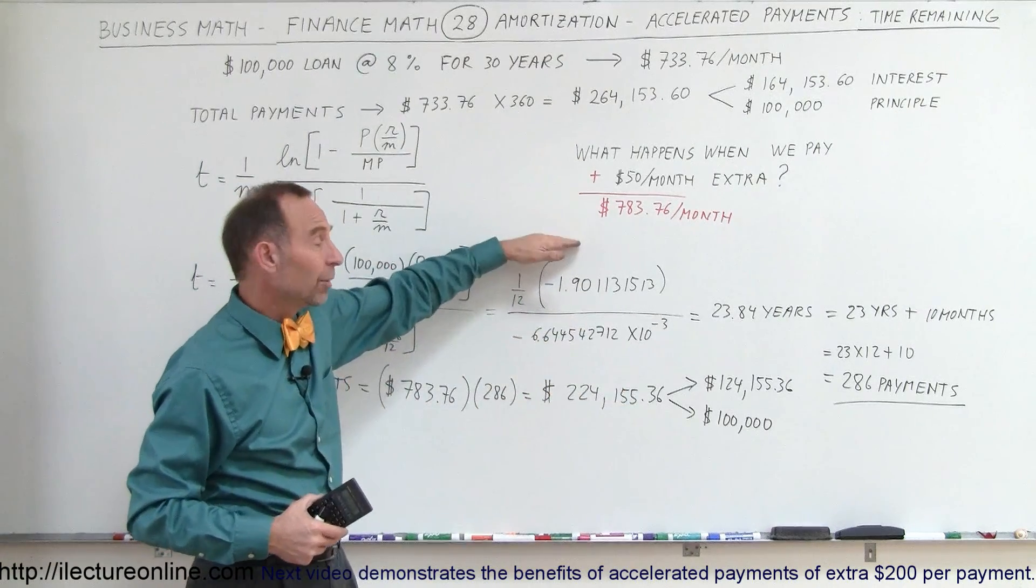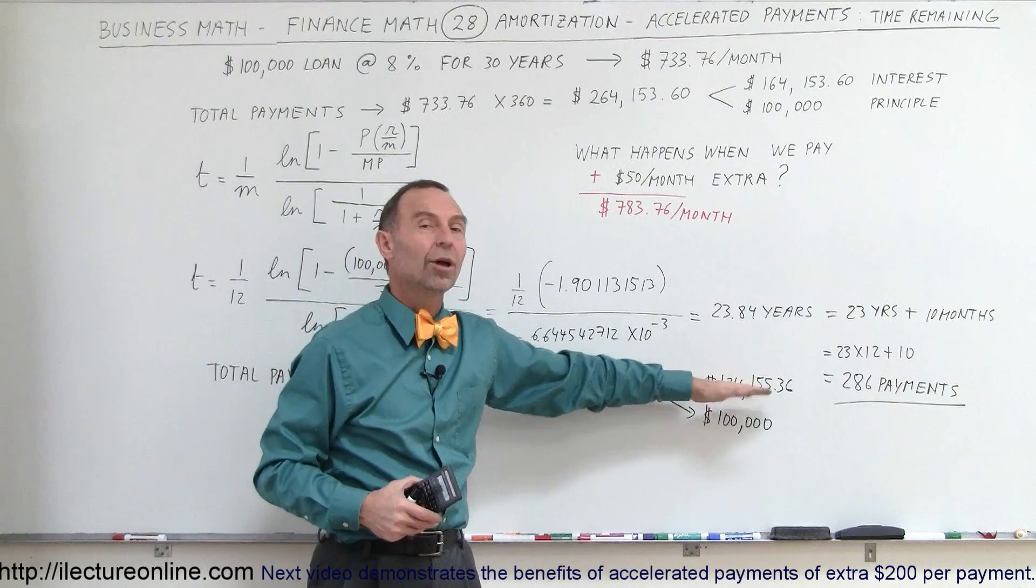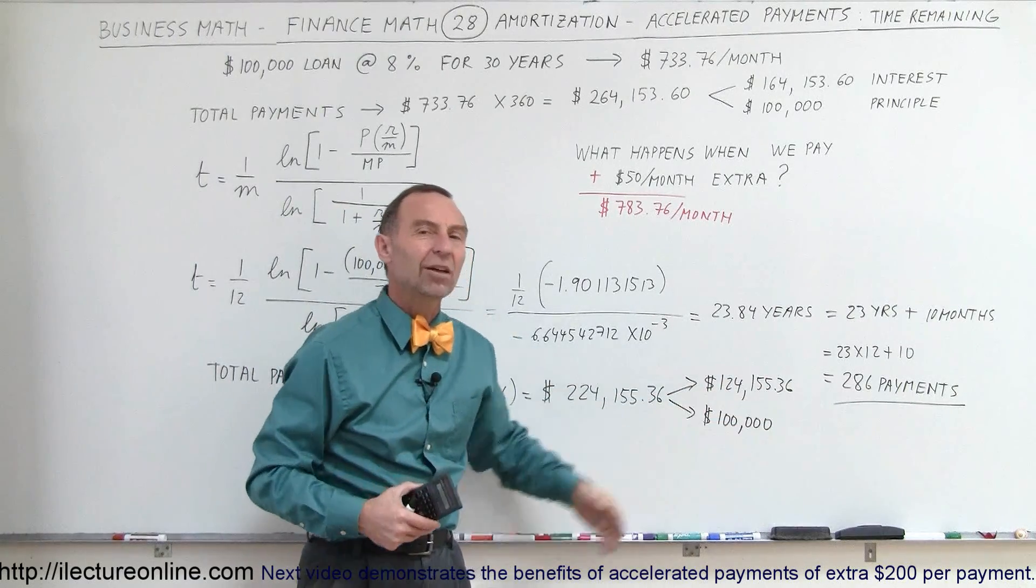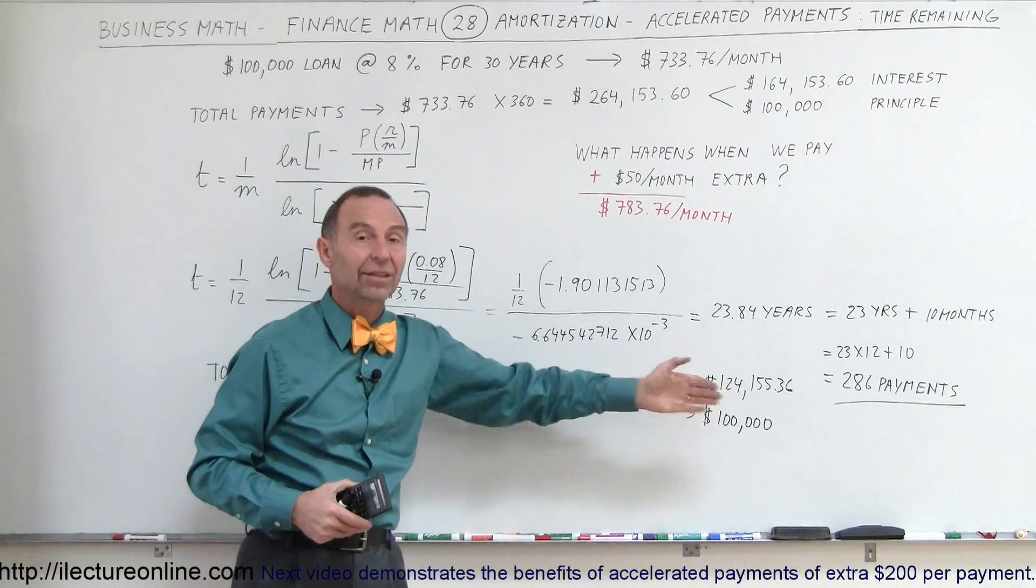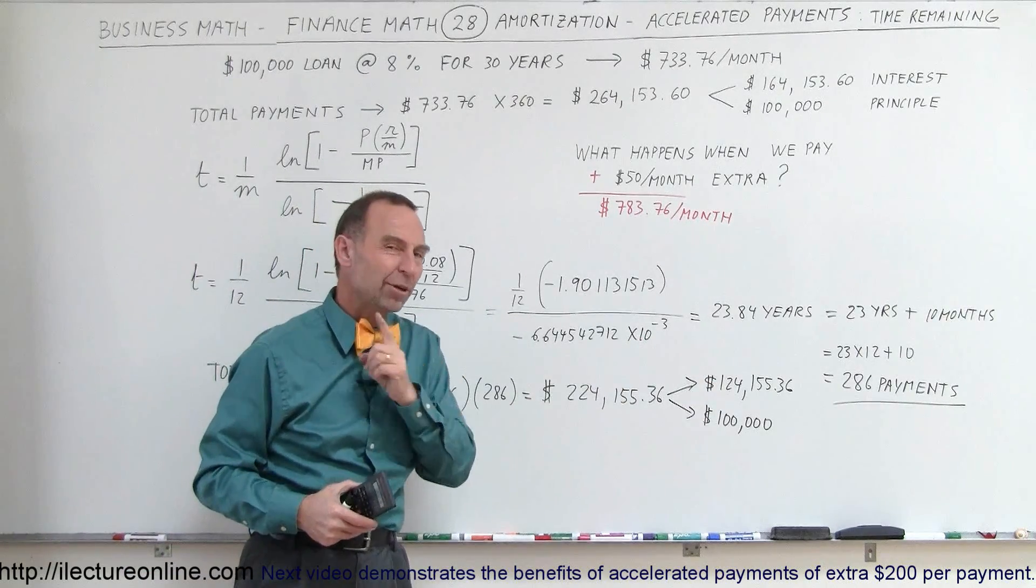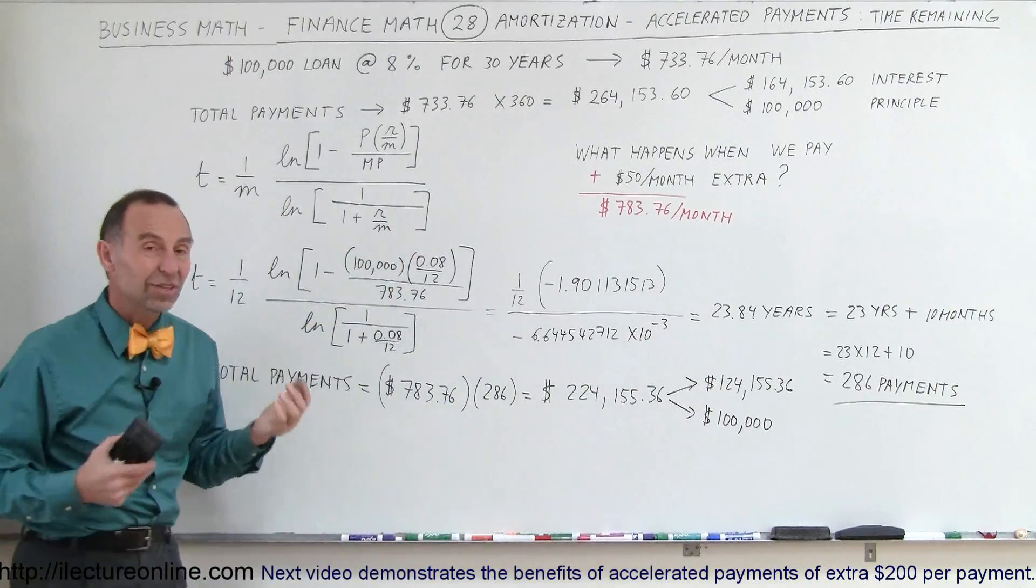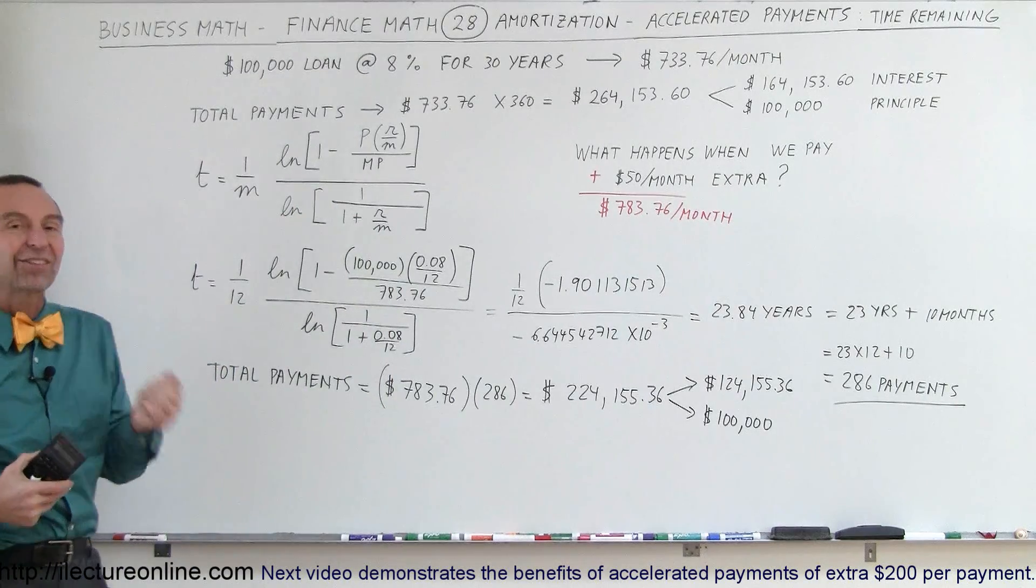So if you go from $50 to $100 a month, I bet you can save almost double that, $70,000, $75,000 over the life of the loan, and you'll probably pay it off in less than 20 years with an extra payment of $100 a month. So you can see the tremendous benefit of accelerated payments.